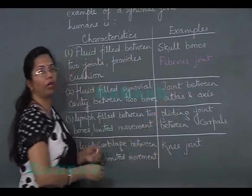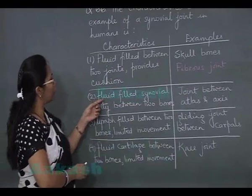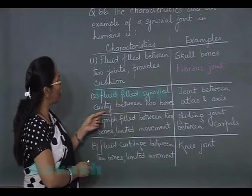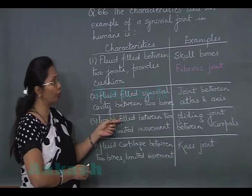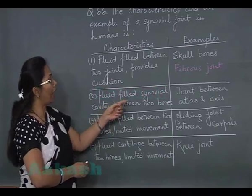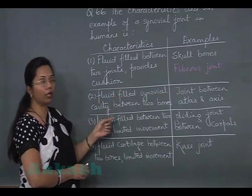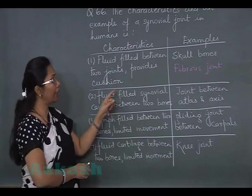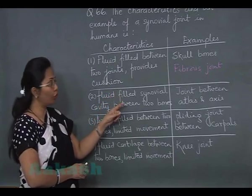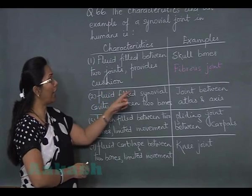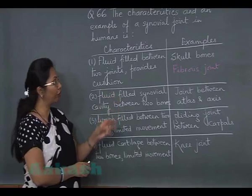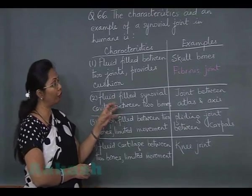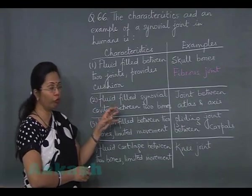The next option is fluid filled synovial cavity between two bones, and the joint between atlas and axis. This is certainly an example of a synovial joint, and at the joint there is synovial fluid which provides lubrication for easy movement.